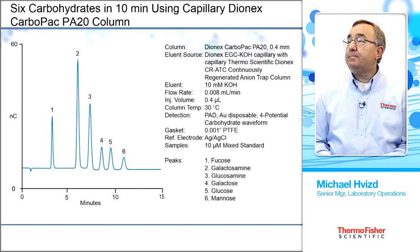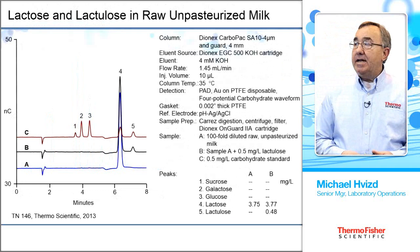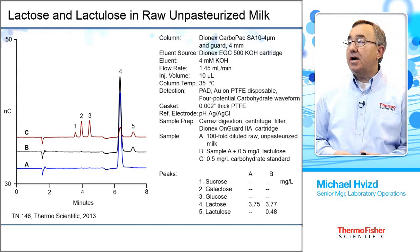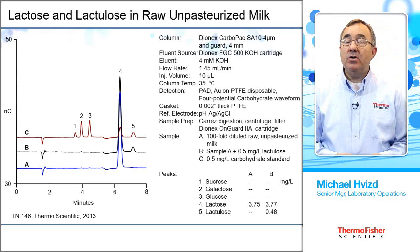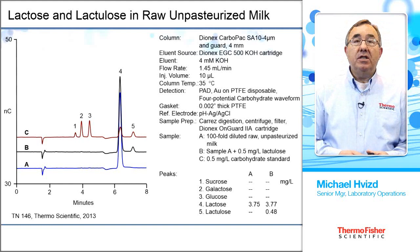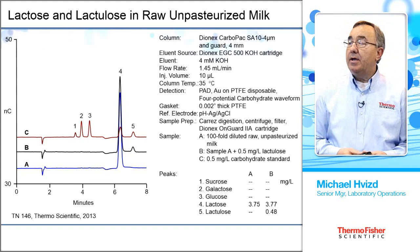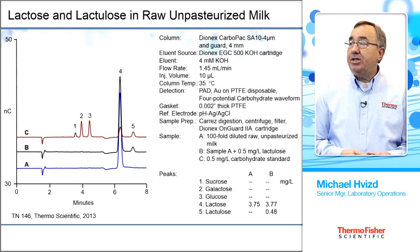Here's a chromatogram using the SA10 again in normal 4 millimeter format, but with a 4 micron particle size column. The SA10-4 micron makes the separation faster and gives better resolution. In this separation, we're looking at lactose and lactulose — two sugars in unpasteurized milk. The separation itself isn't so difficult; in this application it's really the sample prep, which includes a digestion, then centrifugation, then filtration, and then a dilution before running on the chromatograph.